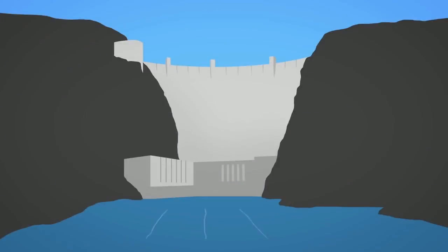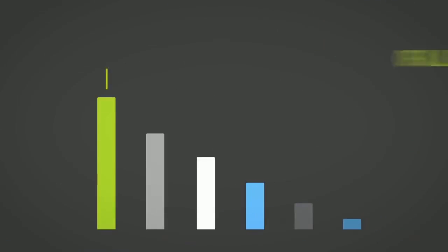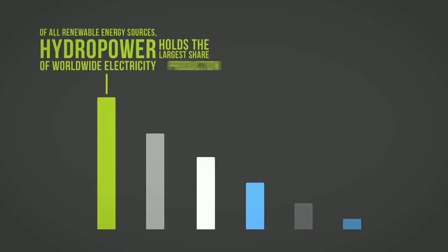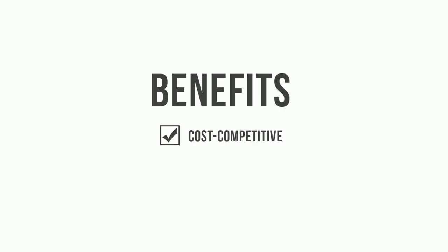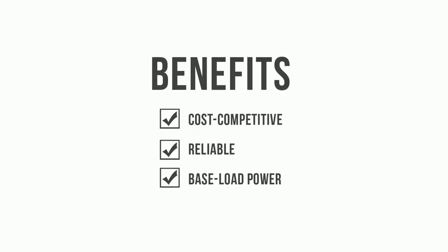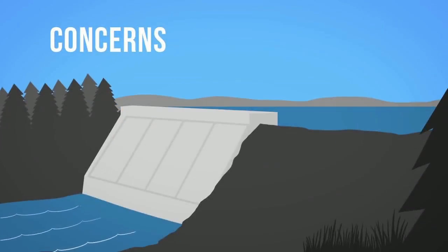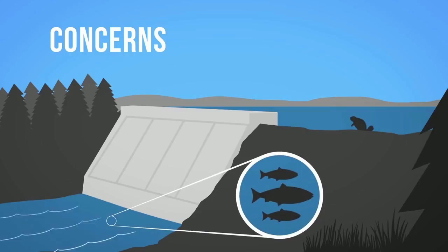The Hoover Dam in the United States is a whopping 2,074 megawatts, which is enough to serve 1.3 million people. Of all renewable energy sources, hydropower holds the largest share of worldwide electricity production. Hydropower has several benefits: it is cost competitive, quite reliable, and pairs well with other sources as base load power. In some cases, dammed reservoirs can also help with flood control and be a reliable water supply for communities. However, damming a river has a major impact on the local environment, changing wildlife habitats, blocking fish passage, and often forcing people in riverside communities to move.